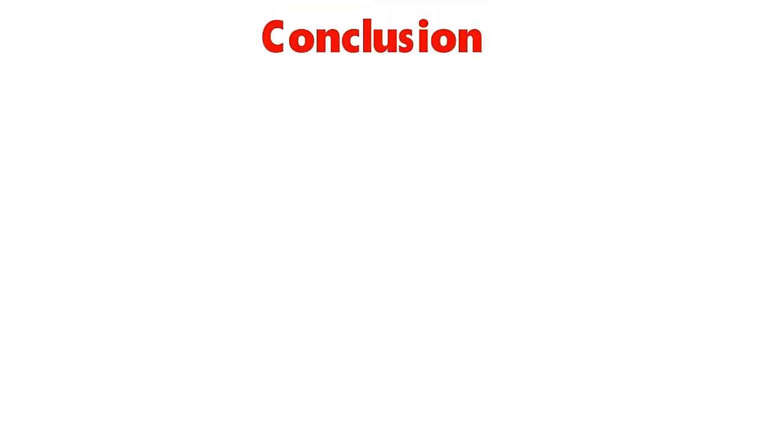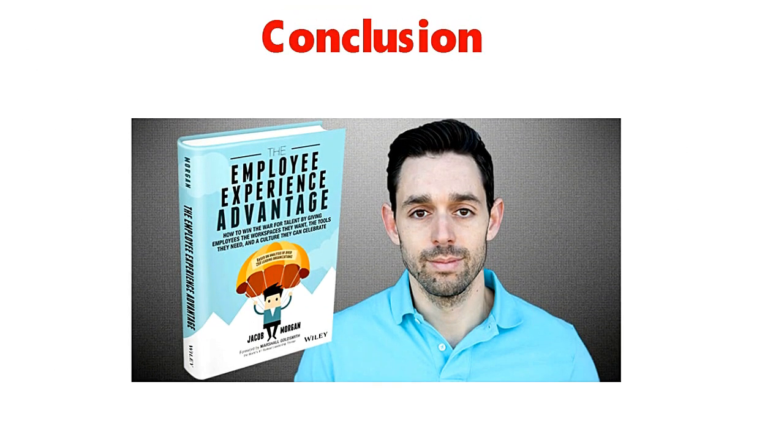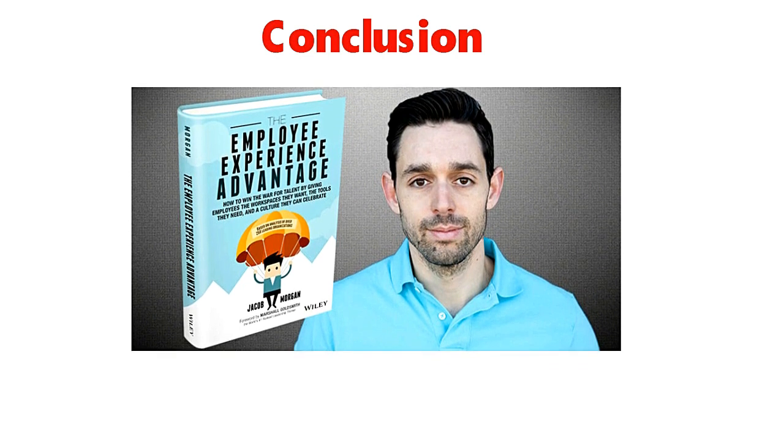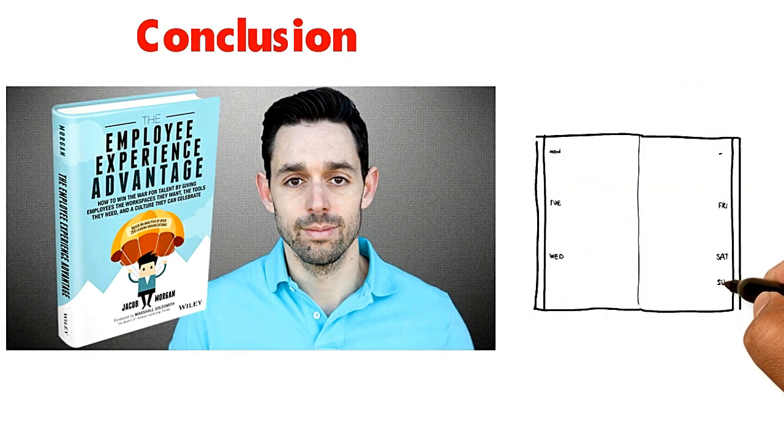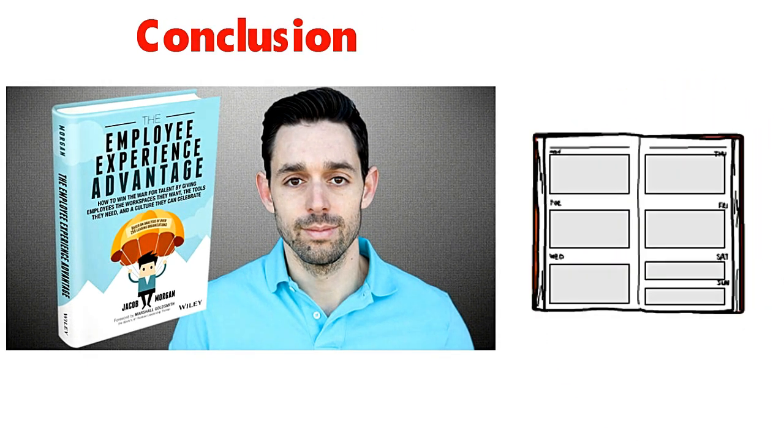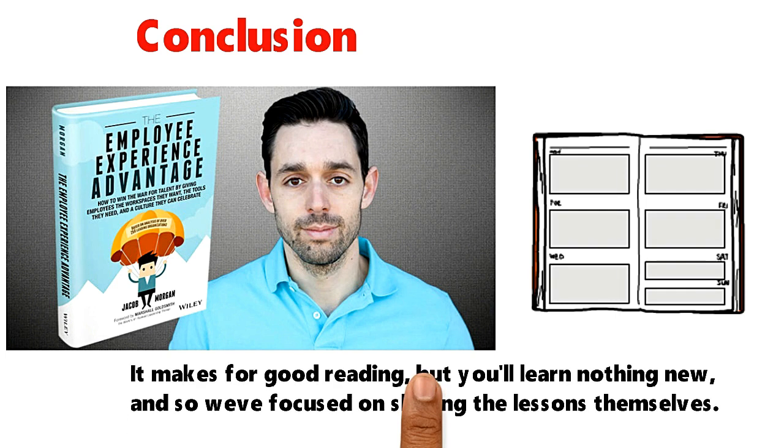Conclusion. The rest of Morgan's book focuses on individual companies such as Airbnb and Adobe, explaining what those companies did to improve their employee experience and relating it back to the lessons that are taught in the book. It makes for good reading, but you'll learn nothing new, and so we focused on sharing the lessons themselves.